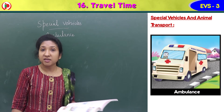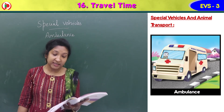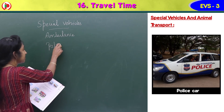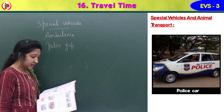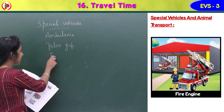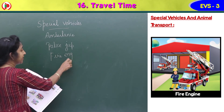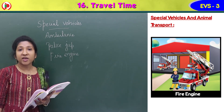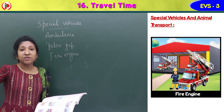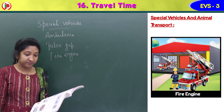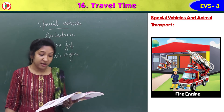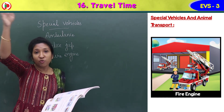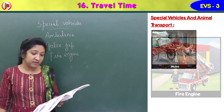A police jeep carries policemen, and sometimes we can hear the siren on the police vehicle. A fire engine comes with a siren when a building catches fire. Firemen come and put out the fire. The fire engine is a red vehicle carrying firefighters, special equipment, and a big hose full of water to spray and put out fires.